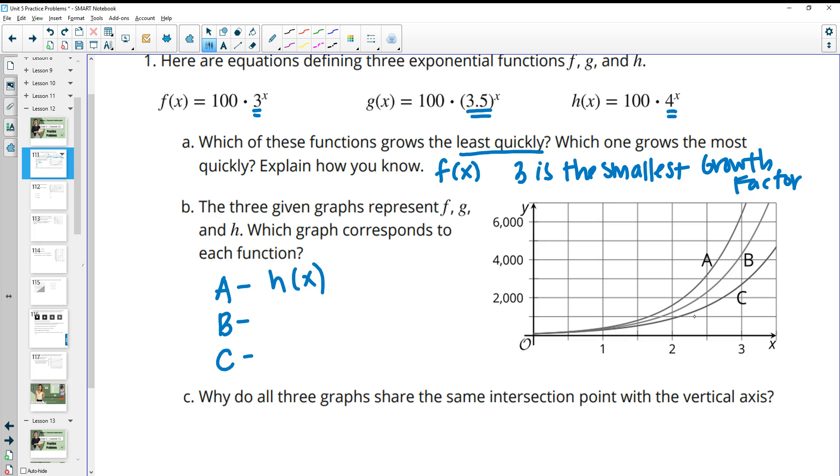Then the bottom one would have the lowest growth factor, which we figured out in part a was f(x). And then that leaves g(x) to go with b, having the middle growth factor.